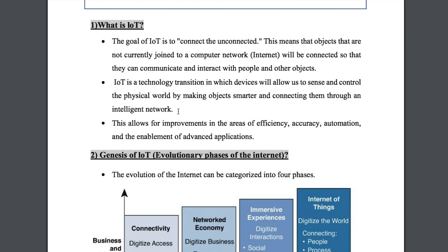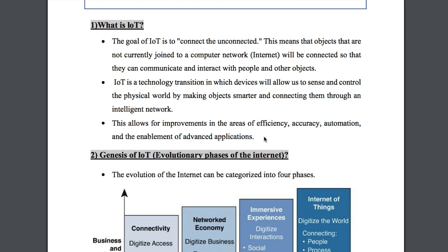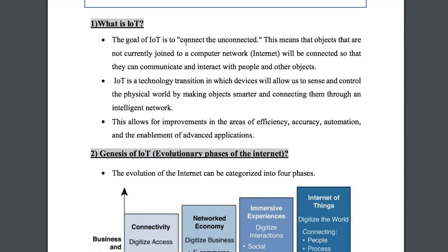This allows for improvement in the areas of efficiency, accuracy, and automation, and the enablement of advanced applications. When your advanced applications require accuracy, automation, and efficiency, you learn improvements in this field. The main thing to note is: IoT connects the unconnected. That is what IoT is.